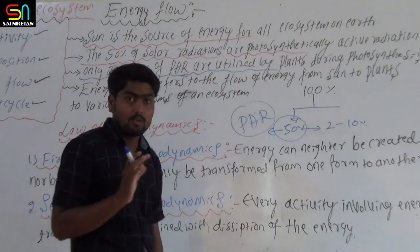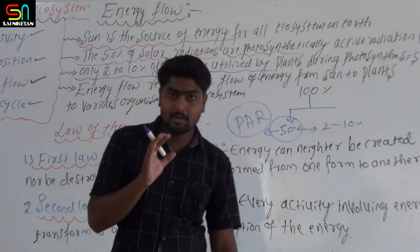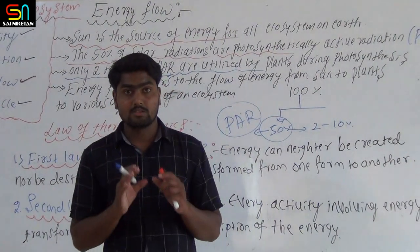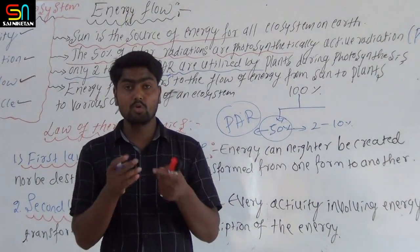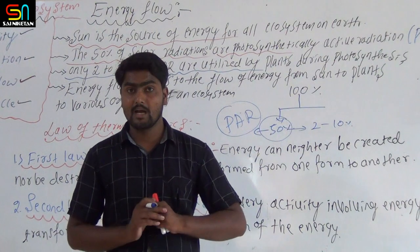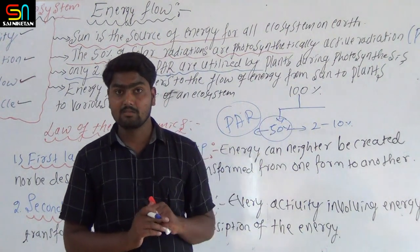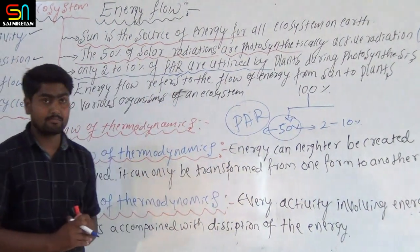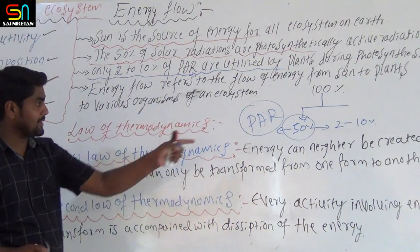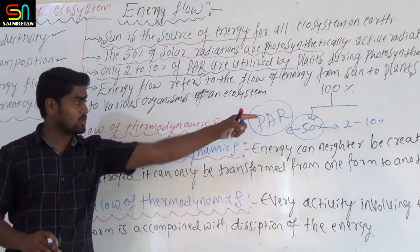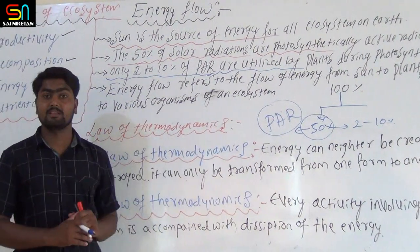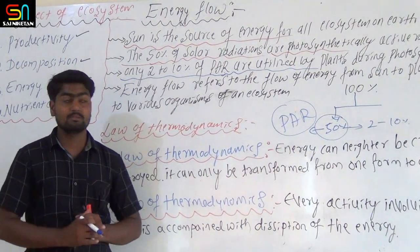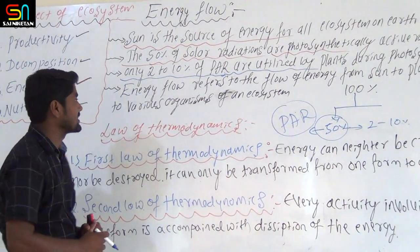Only 2 to 10% of photosynthetically active radiations are utilized by plants during photosynthesis. During the mechanism of photosynthesis, the plant uses only 2 to 10% of PAR.